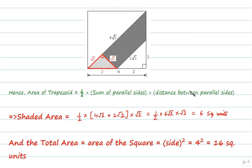Now we can use the formula for the area of the trapezoid. Parallel sides are 4√2 and 2√2 units and the distance between the parallel sides is √2 units. So the formula gives us the area of the shaded portion as 6 square units.